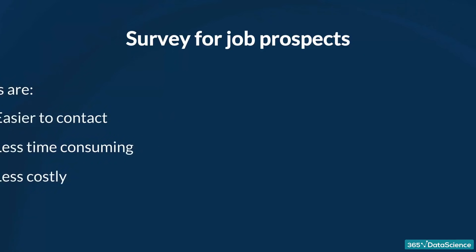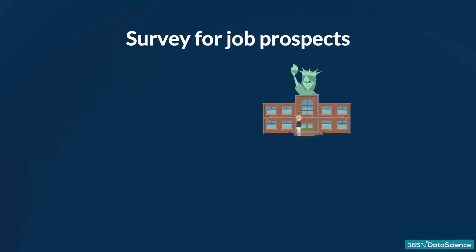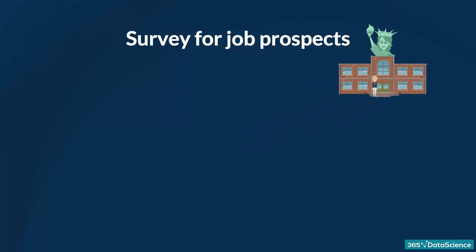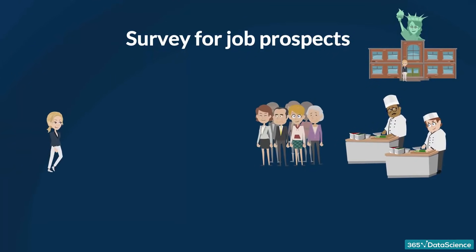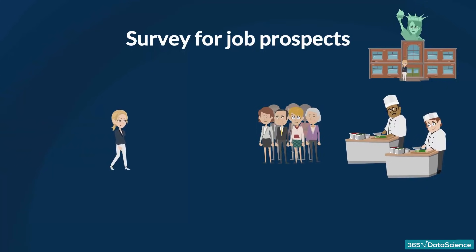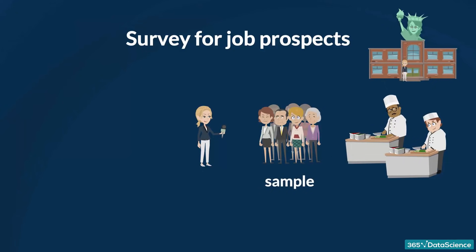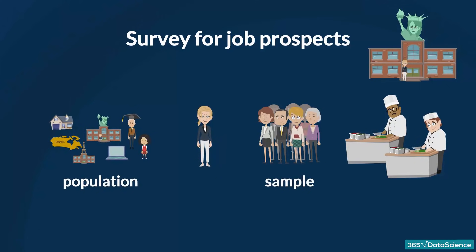As we first wanted to do, we can just go to the NYU campus. Let's enter the canteen because we know it will be full of people. We can then interview 50 of them. This is a sample. But what are the chances of these 50 people providing answers that are a true representation of the whole university? Pretty slim, right? The sample is neither random nor representative.